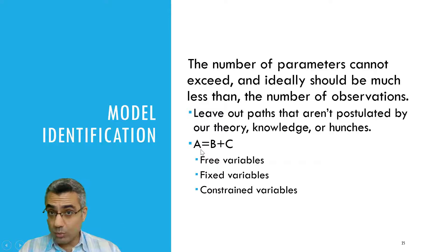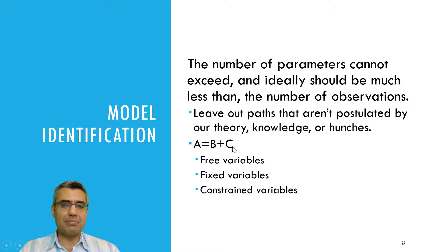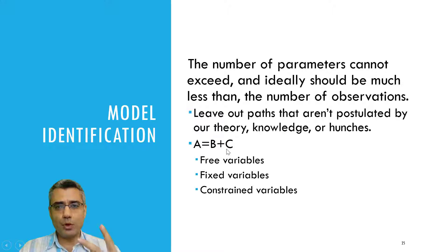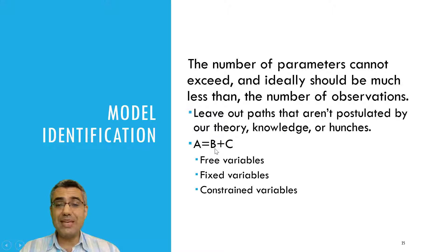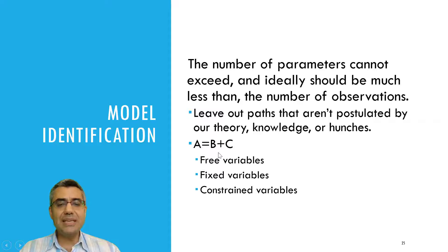Let me give you an example. Consider the equation: A equals B plus C. If A is 10, can you solve it? No, because B can be 3 and C can be 7, or B can be 4 and C can be 6. There are two unknown parameters, which is more than the one known parameter A. To solve it, you can fix one unknown — say fix B at 4, then C will be 6. Or you can assume B equals C, giving B and C both equal to 5.